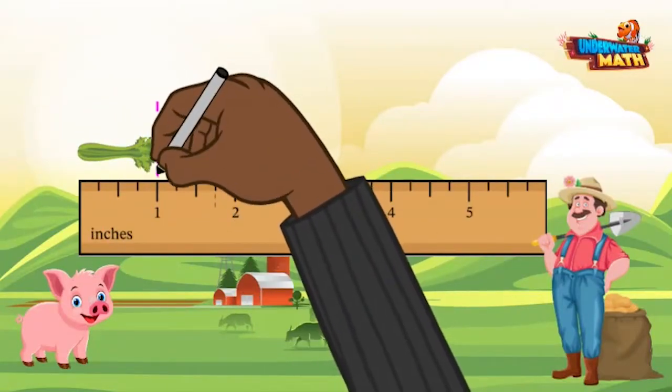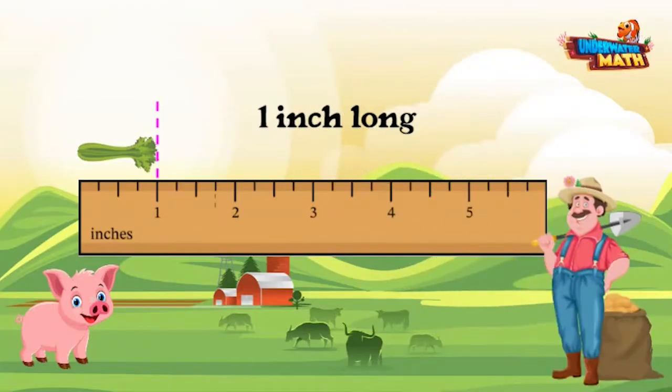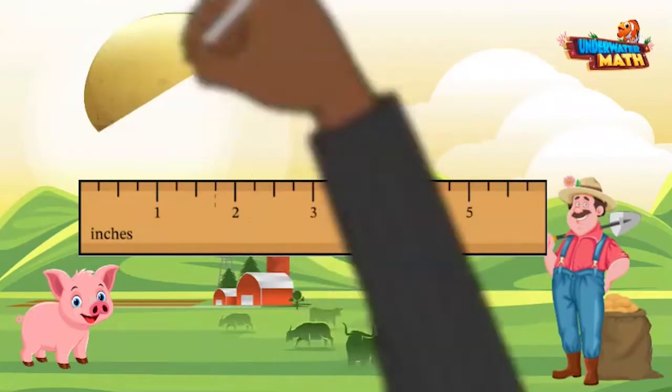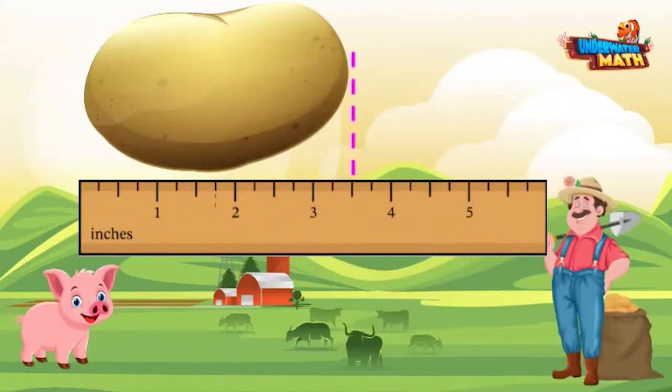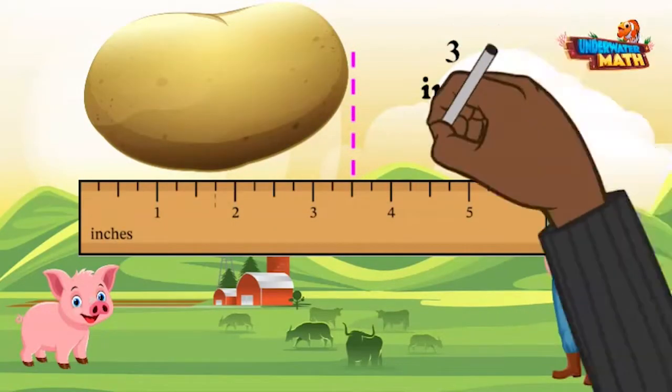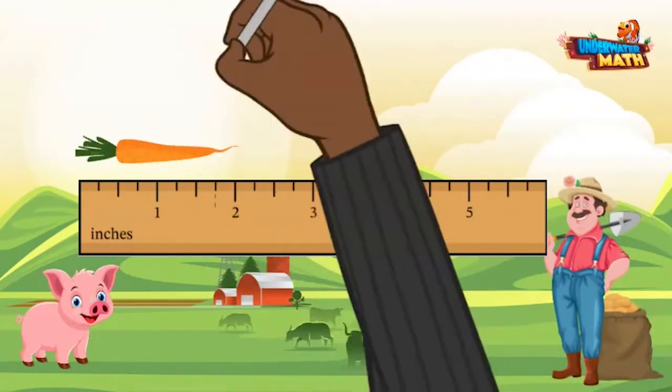This celery is one inch long. This potato is between three and four inches, which would be three and a half inches. This carrot is two inches.